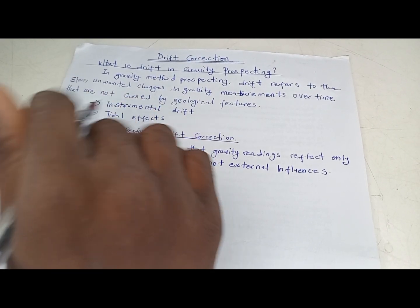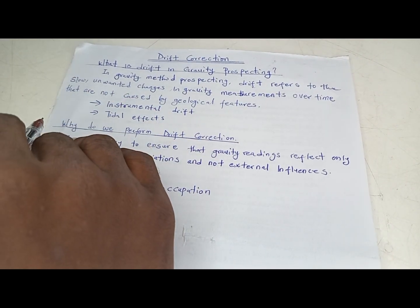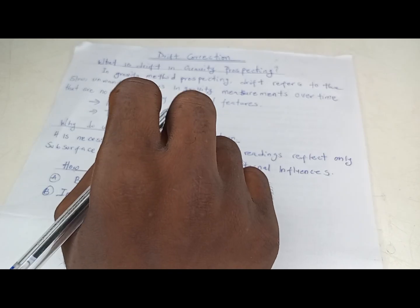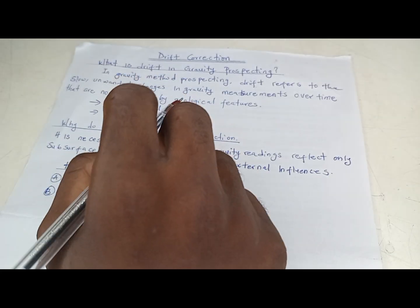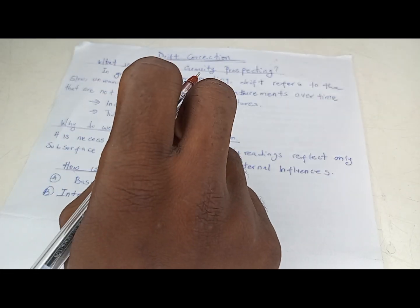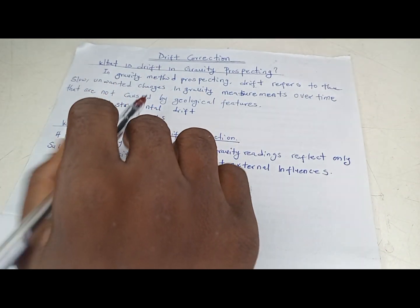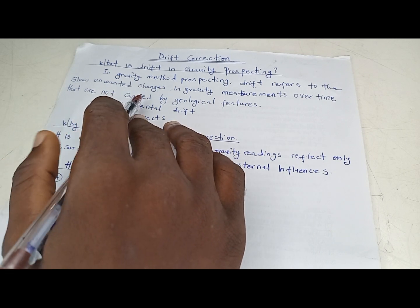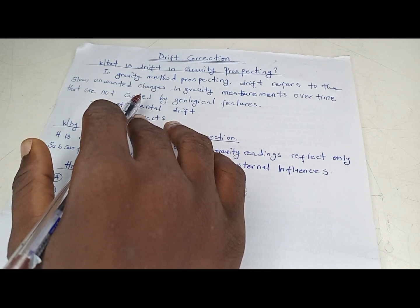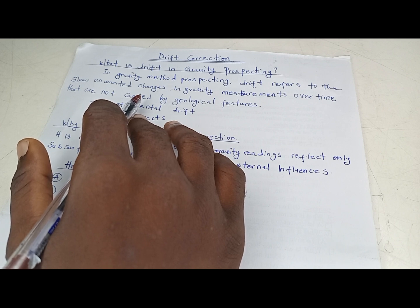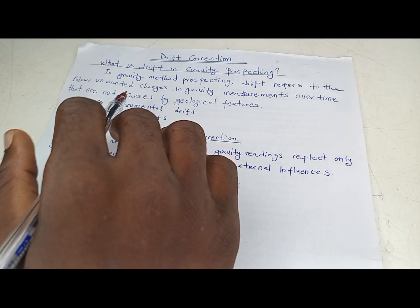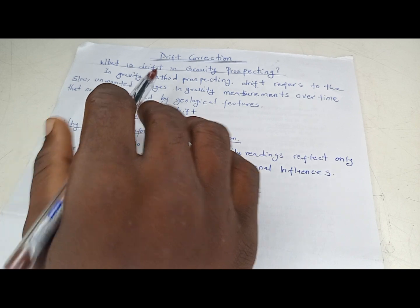Good day everyone, welcome to GeoTutors. We are starting a series on gravity reduction. Our first part of gravity reduction is doing the drift correction. After getting your data from the field using the gravity method, there are some corrections that you need to do, and one of these corrections is the drift correction.